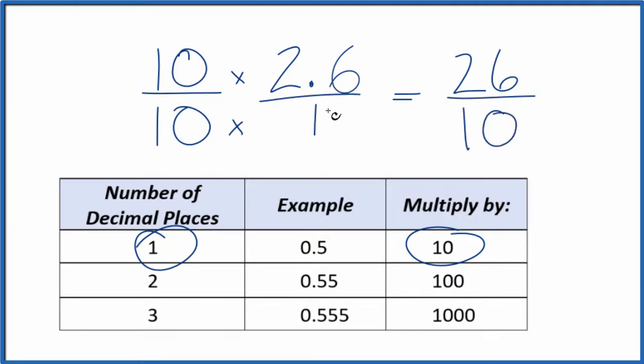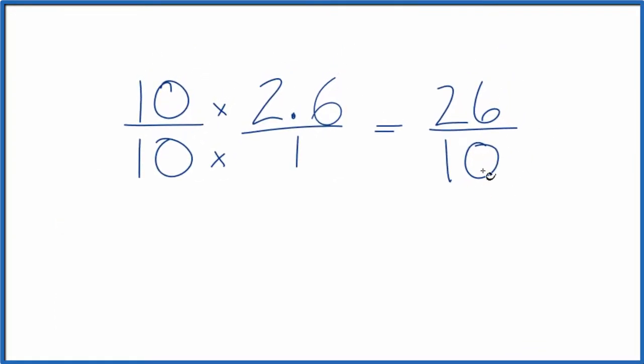2.6, the decimal, equals the fraction 26 tenths. We could actually simplify this a little bit further. These are both even numbers. So let's divide 26 by 2. That would give us 13. Divide 10 by 2. That would give us 5.